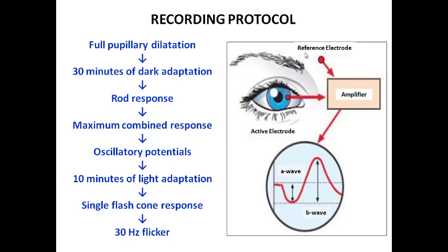The ERG protocol starts with full pupillary dilation, followed by 30 minutes of dark adaptation. Eyes are totally closed and we start analyzing the response of rods. The second option is maximum combined response from both rod and cone responses. Oscillatory potentials are then analyzed. Further, we start with 10 minutes of light adaptation of the eye and single flash cone response is analyzed. Finally, the intensity is measured with respect to flickering of 30 Hz light intensity. This is the regular recording protocol of ERG.